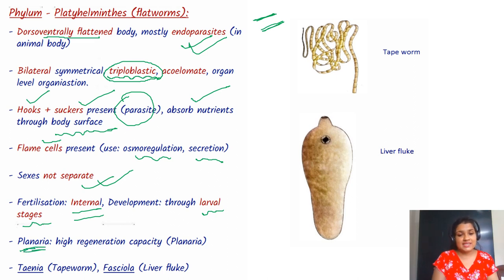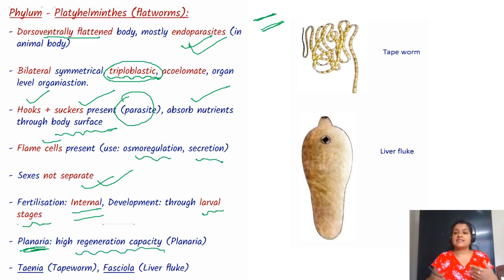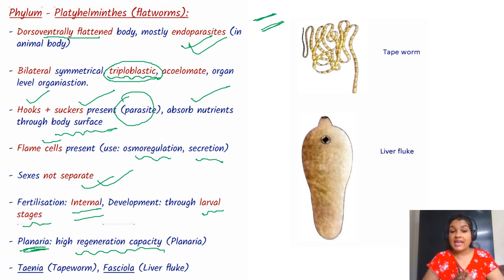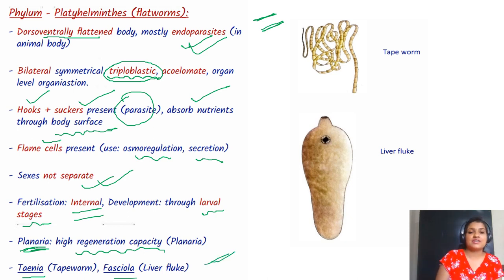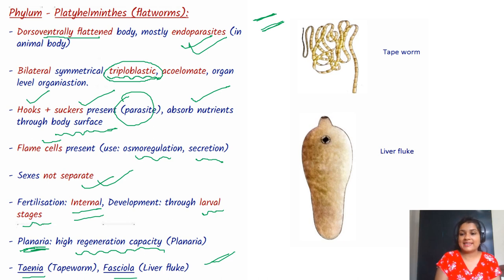One of the Platyhelminthes, that is Planaria, has a high regeneration capacity. Examples are Taenia solium and Fasciola, that is liver fluke. So here we end phylum Platyhelminthes.